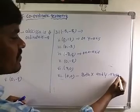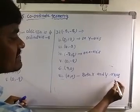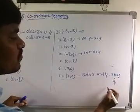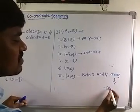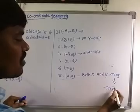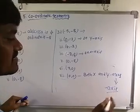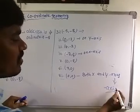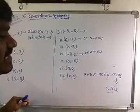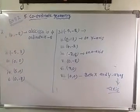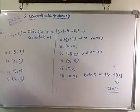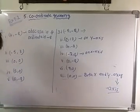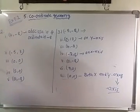Note: the plural form of 'axis' is 'axes'. So (0,0) lies on both x and y axes. Now move on to the next problem.